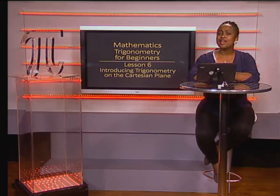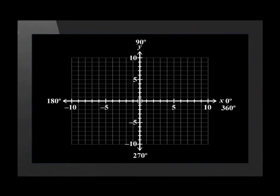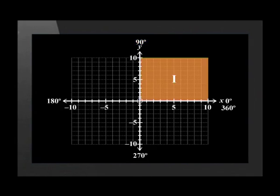Let's start by identifying the parts of the Cartesian plane. On a Cartesian plane, zero degrees falls on the positive x-axis. Traveling in an anti-clockwise direction, we find that 90 degrees falls on the positive y-axis. This block is called the first quadrant.